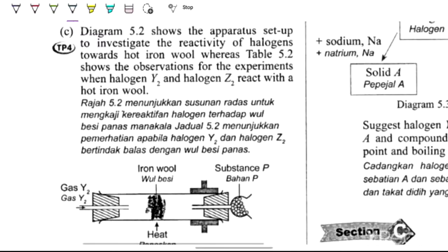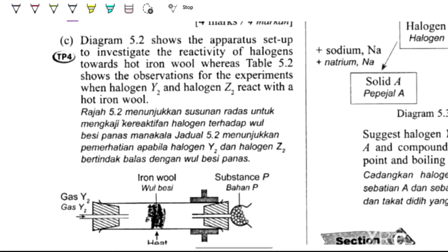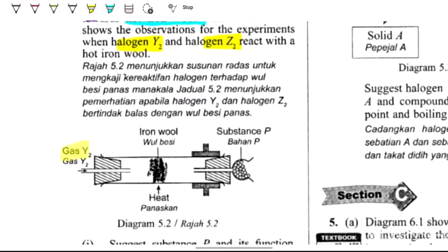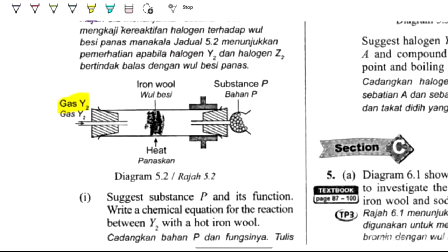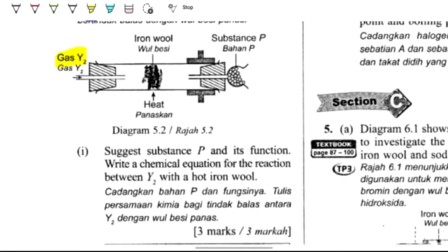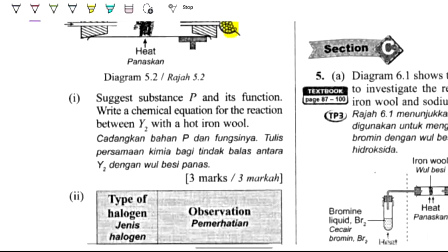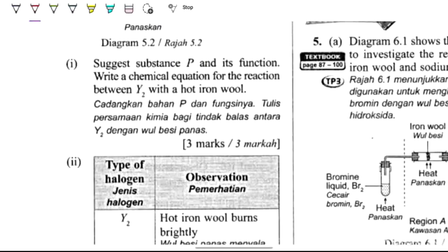Diagram 5.2 shows the apparatus to investigate the reactivity of halogens when reacting with hot iron wool. Table 5.2 shows the observations for halogens Y2 and Z2 reacting with hot iron wool. Suggest substance P in the apparatus. That's 3 marks including the function.